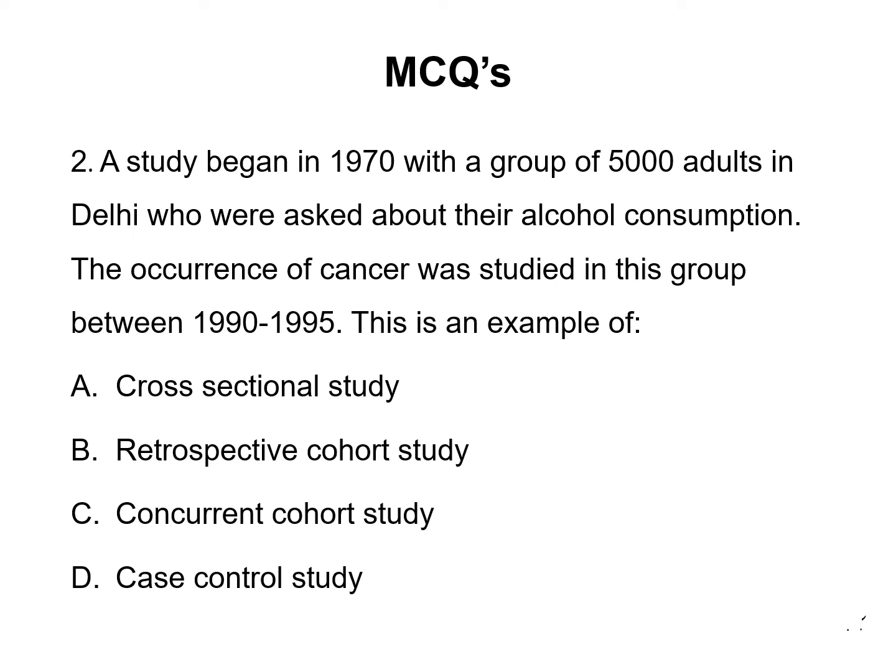Let's discuss the next MCQ. A study began in 1970 with a group of 5,000 adults in Delhi who were asked about their alcohol consumption. The occurrence of cancer was studied in this group between 1990 to 1995. The options are: cross-sectional study, retrospective cohort study, concurrent cohort study, and case control study.